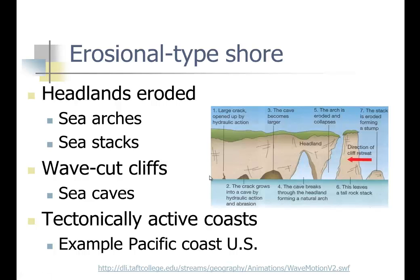Looking at erosional type beaches, we actually have headlands — it's more of a cliff type environment. We have sea arches where, as the headland gets thinner and thinner, caves go from one side to the other and make arches. We have stacks where the arches have broken, stumps where the stacks have been cut back, and wave cut platforms and cliffs.